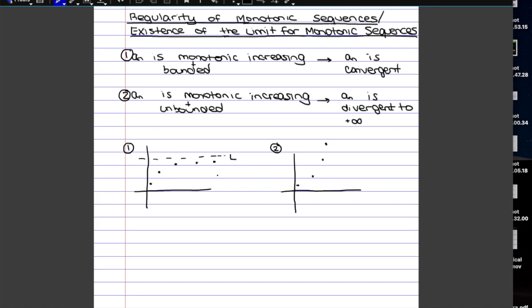With functions, if something is increasing it does not have to be bounded below necessarily. But for sequences it does, because the first point of a sequence is a specific point — there's nothing before it. So if it's increasing from there, that first point has to be the lowest point, meaning a₀ would be the minimum. For decreasing sequences, you would have a maximum at the first term.